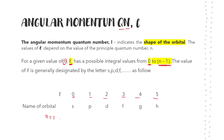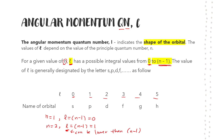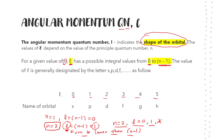If N=1, then L can be N minus 1, which is 0. When N=2, L can be a maximum of 1. But L can also be lower than N minus 1. So when N=2, you have L=0 and L=1. Remember that L is the shape of the orbital — when L=0, the shape is S, which is spherical.